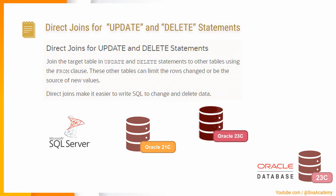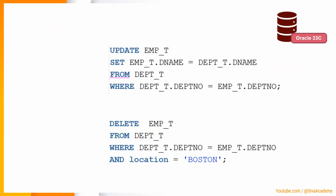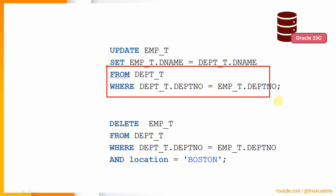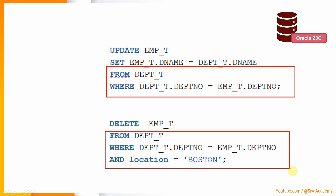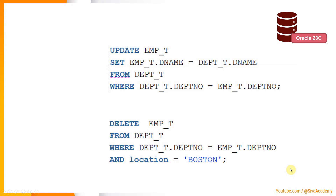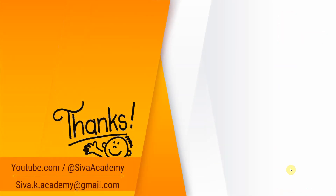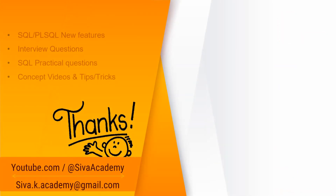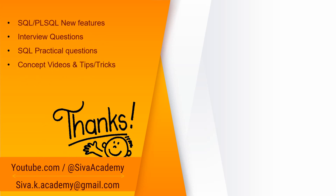Here is the query for your reference. From Oracle 23c onwards, we can directly join the target table in the FROM clause as part of both UPDATE and DELETE statements. If you learned something new, please like this video, subscribe, and stay tuned for new feature videos, interview questions, SQL practical questions, and concept videos. Thanks for watching!